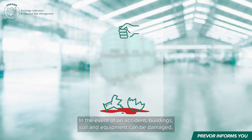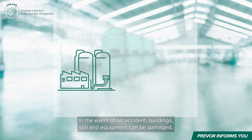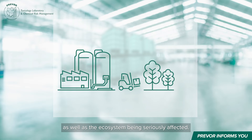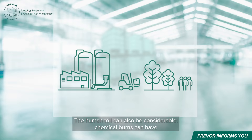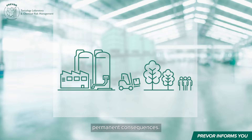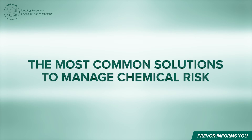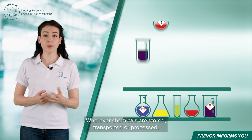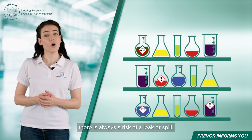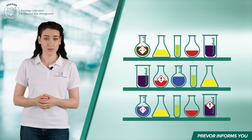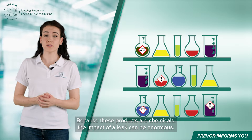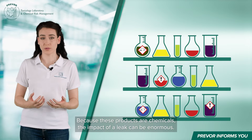In the event of an accident, buildings, soil and equipment can be damaged, as well as the ecosystem being seriously affected. The human toll can also be considerable. Chemical burns can have permanent consequences. Wherever chemicals are stored, transported or processed, there is always a risk of a leak or spill. Because these products are chemicals, the impact of a leak can be enormous.